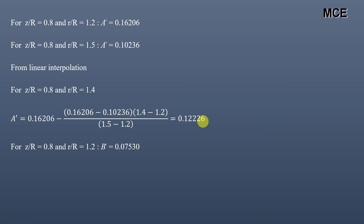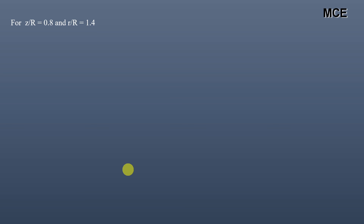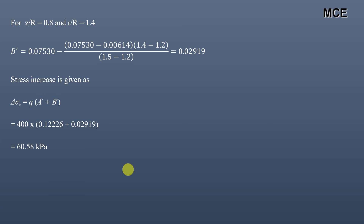Similarly, interpolating for B prime between r/R equals 1.2 and 1.5: for Z/R equals 0.8 and r/R equals 1.2, B prime is 0.07530; for r/R equals 1.5, B prime is 0.00614. From linear interpolation for r/R equals 1.4, B prime equals 0.02919. Therefore the stress increase equals 400 multiplied by (0.1226 plus 0.02919), which equals 60.58 kilopascal.